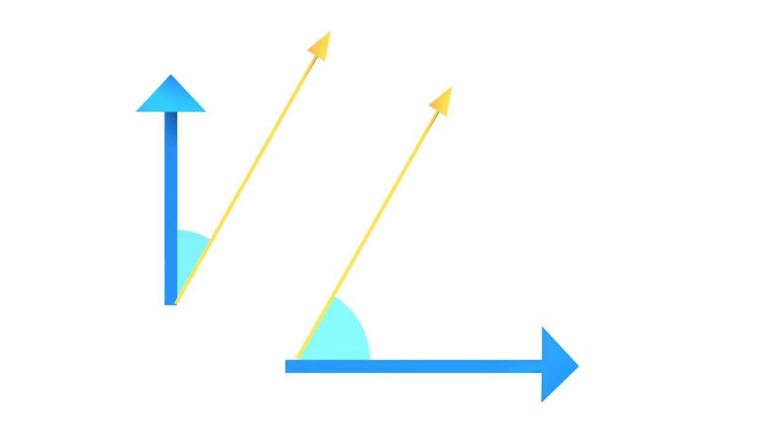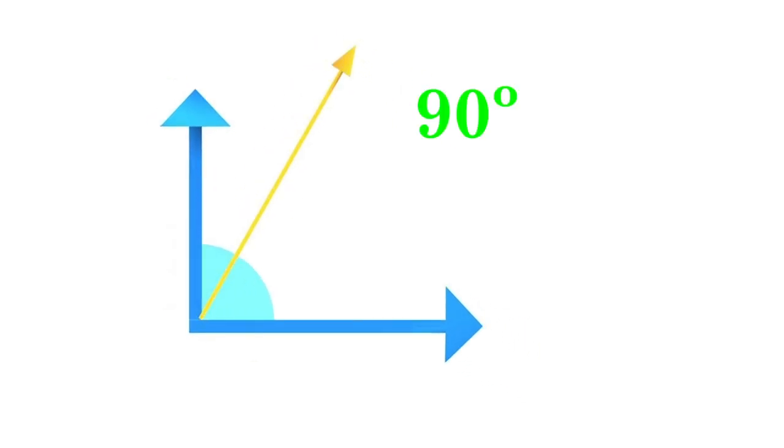When two angles combine to create a 90 degree angle, then they are called complementary angles. If two angles are complementary, you can find one angle by knowing the measurement of the other angle.